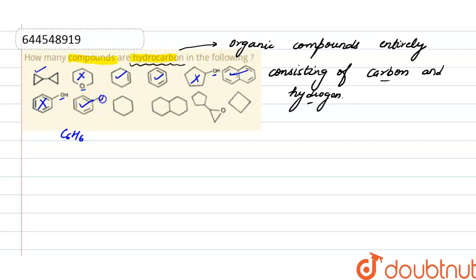And here also this is a hydrocarbon because all are carbon and hydrogen. This whole compound is also a hydrocarbon. This compound is not hydrocarbon because one oxygen is present. And here this is also made up of carbon and hydrogen atoms.